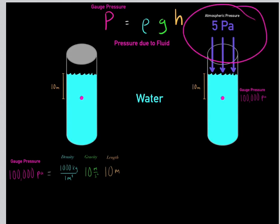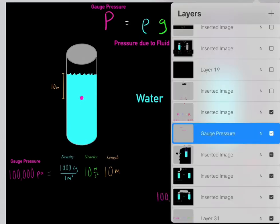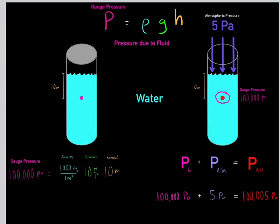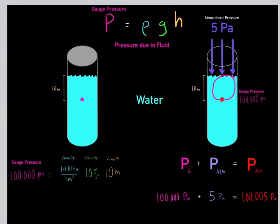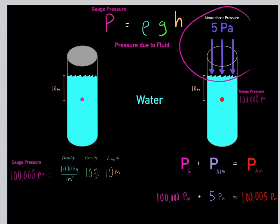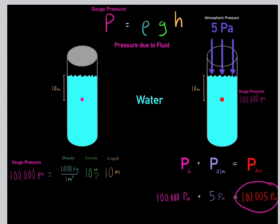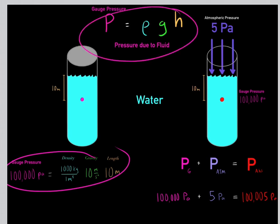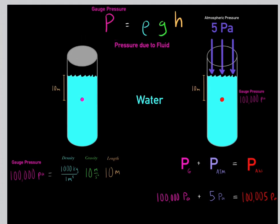If we also have atmospheric pressure, that increases the absolute pressure. To determine the absolute pressure at a given point, we take the gauge pressure — the pressure due to the liquid above that point — and add it to the atmospheric pressure. The gauge pressure due to the liquid is 100,000 pascals, and because we also have an atmospheric pressure of 5 pascals, we add that to get an absolute pressure of 100,005 pascals. There are three types of pressure: gauge pressure, atmospheric pressure, and absolute pressure, which equals gauge plus atmospheric.